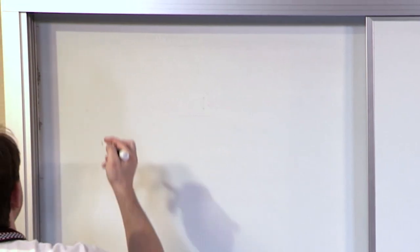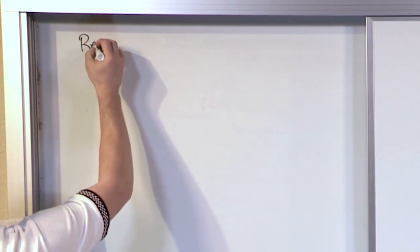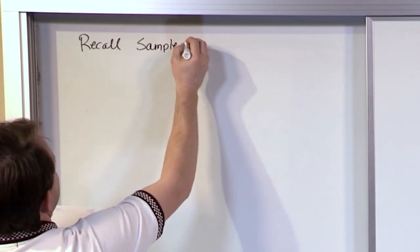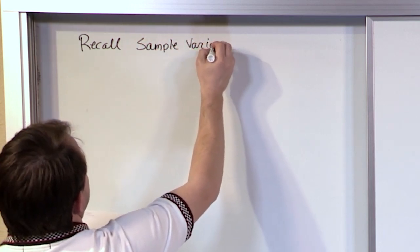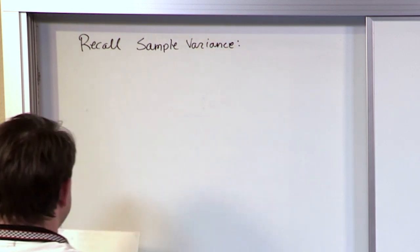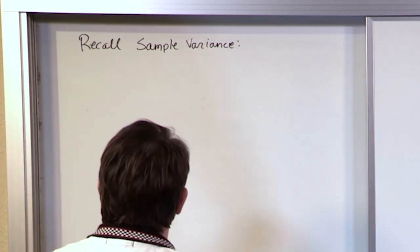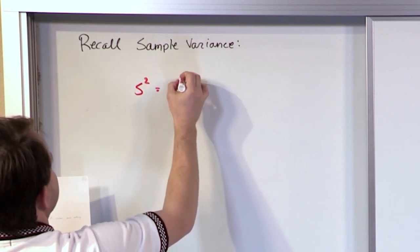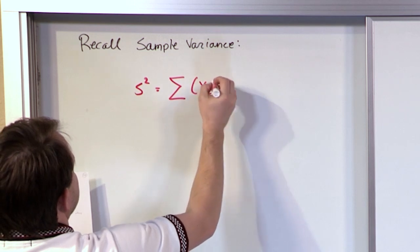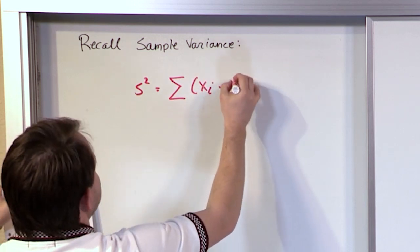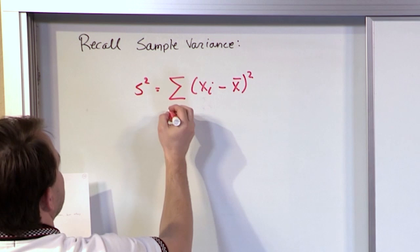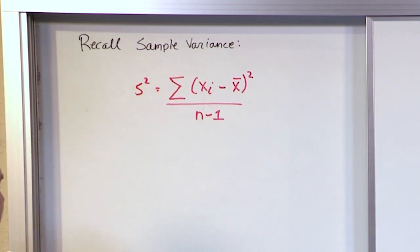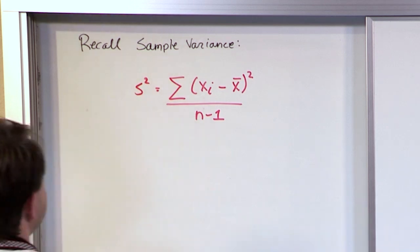Recall, we've already learned the sample variance. The sample variance is denoted S squared and is the sum of the data points minus the average value, squared, over N minus 1. We've done that before and we understand that.